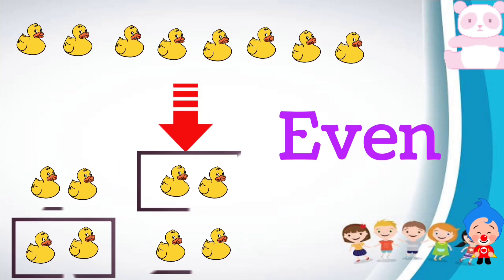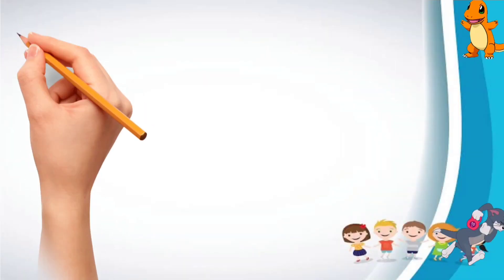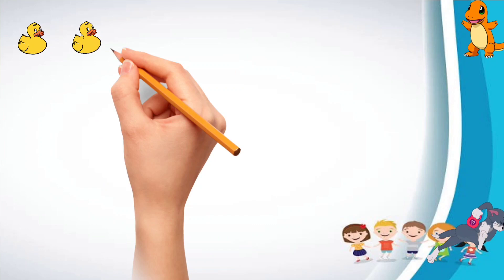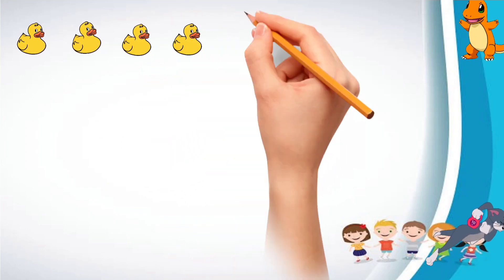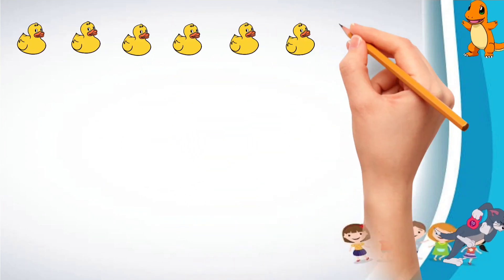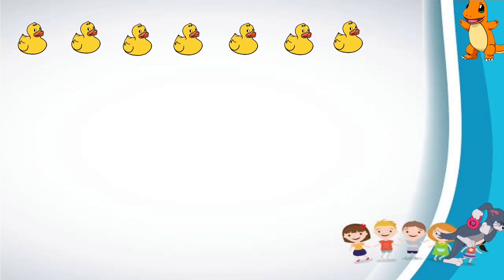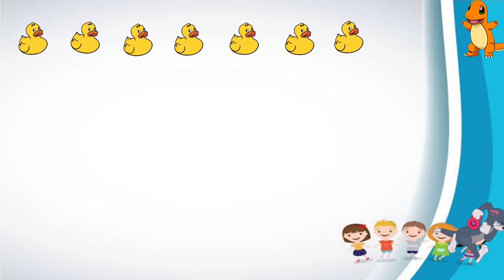Now let's take another example. There are seven dogs. One, two, three, four, five, six, seven dogs. Now let us make pairs.